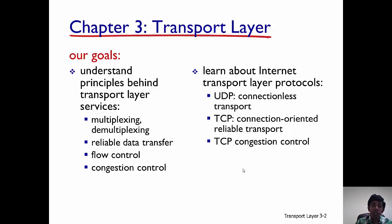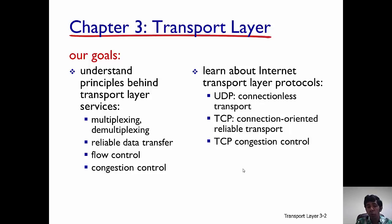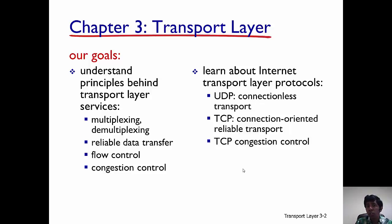UDP is an example of a connectionless transport protocol, while TCP is an example of a connection-oriented and reliable transport protocol. We'll also talk about TCP's congestion control. A lot of the discussion in the transport layer is going to be focused on TCP, and that's a very interesting topic we'll get to later.